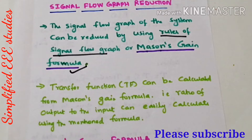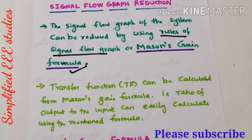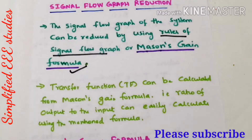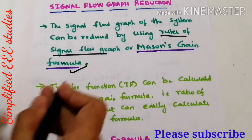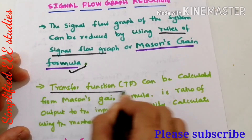Mason's gain formula is designed by S.J. Mason, that is why it is known as Mason's gain formula. You can calculate the transfer function of a signal flow graph easily with the help of Mason's gain formula. The method is much simpler than depending on the different rules of signal flow graph, that is why we mainly use Mason's gain formula for calculating the transfer function.